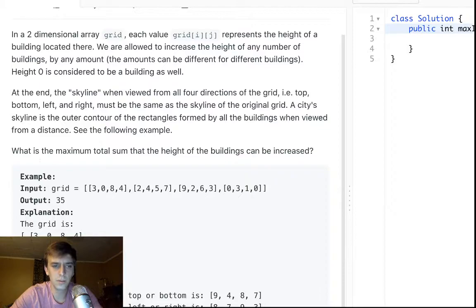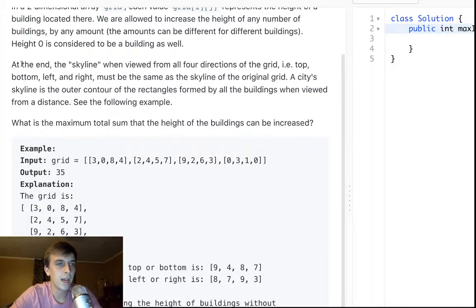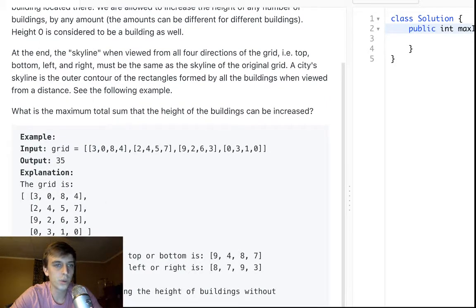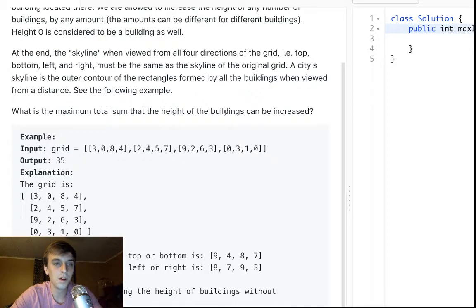So what's the objective? We have these buildings, we're allowed to increase the heights of any of them. At the end, it looks like the skyline viewed from all four directions, bottom left, top right, must be the same as the original grid. So we can increase the buildings as much as we want, but the skyline has to be the same as the original grid. A city skyline is the outer contour of the rectangles formed by the building when viewed from a distance. What is the maximum total sum of the height of the buildings that can be increased?